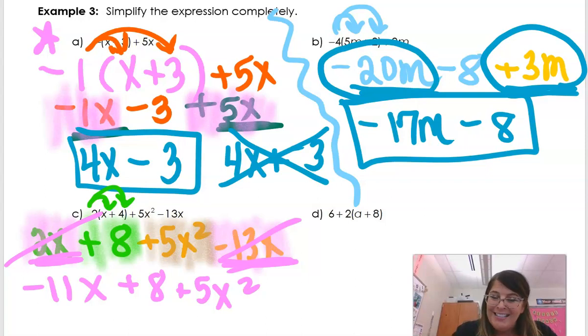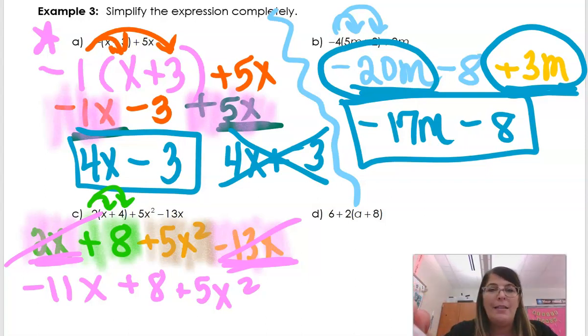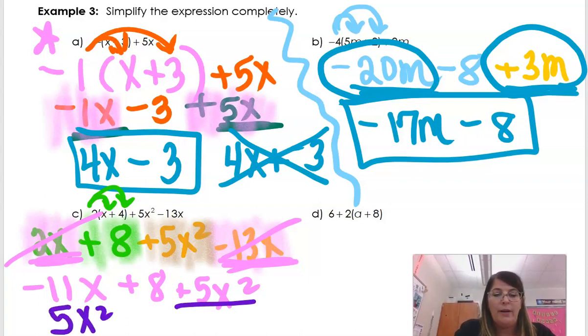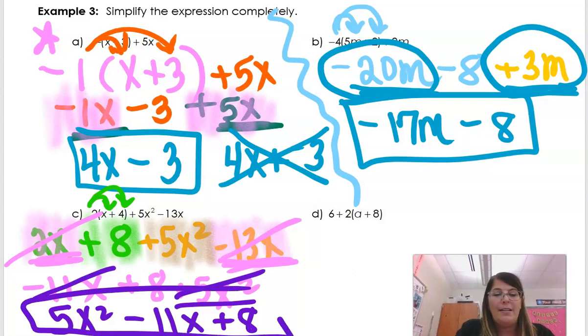Plus 8 plus 5x squared. But you know what? That's not in standard form. So as I talk about this in Buzz, I say, I'd really like you to put it in standard form. What does that mean? Take the biggest exponent first. So that's this x squared guy. So first, I'm going to say 5x squared. Then minus 11x, and then plus 8. And that's going to be the way I'm going to type my answer in.